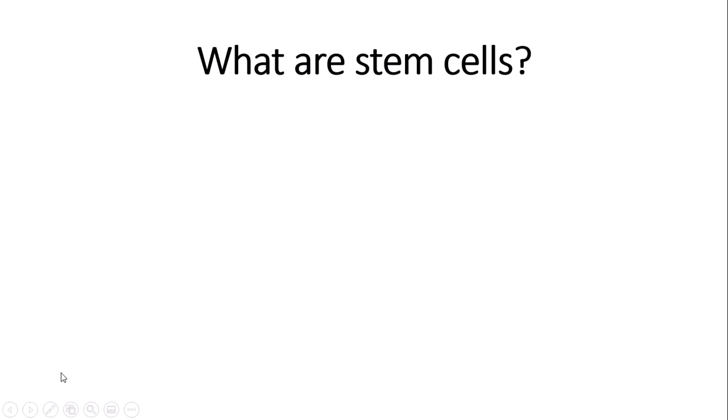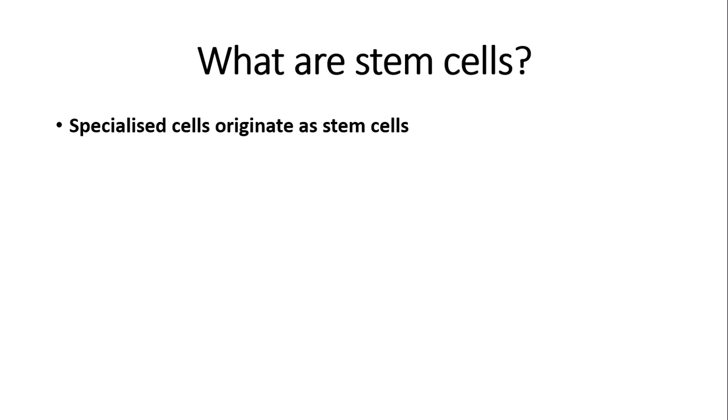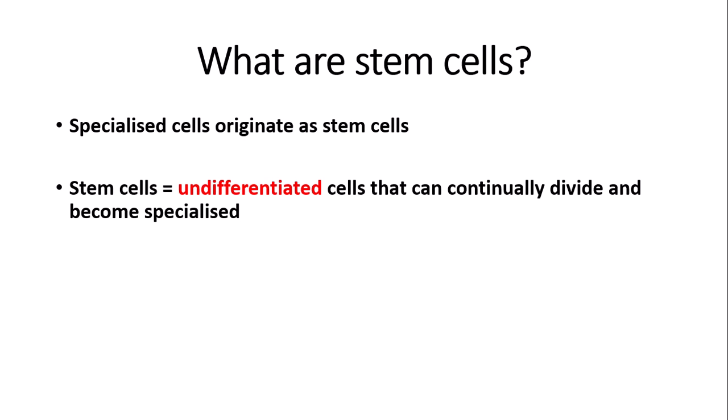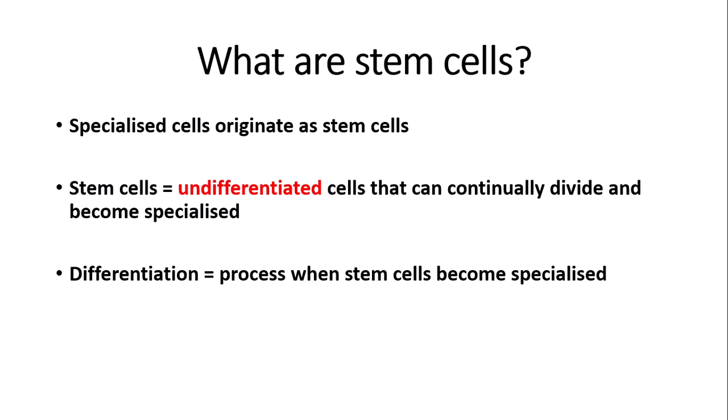So what are stem cells? Specialized cells, for example root hair cells, originate as stem cells. Stem cells are undifferentiated cells that can continually divide and become specialized — they do not have any kind of specialization. Stem cells can then go on to differentiate into specialized cells. Differentiation is a process in which stem cells become specialized to have specific functions.